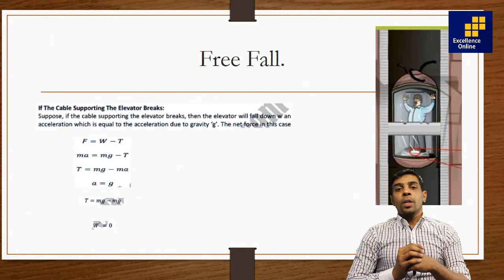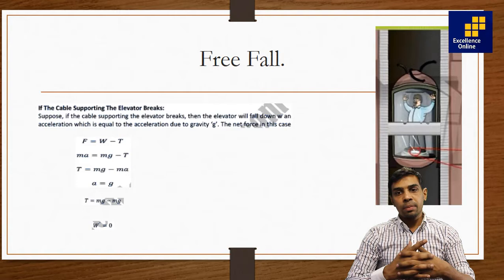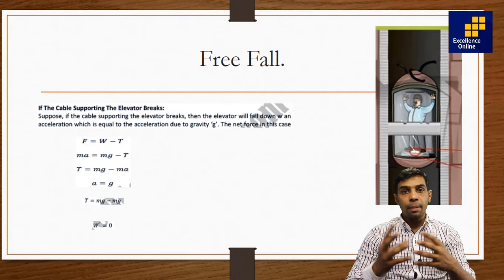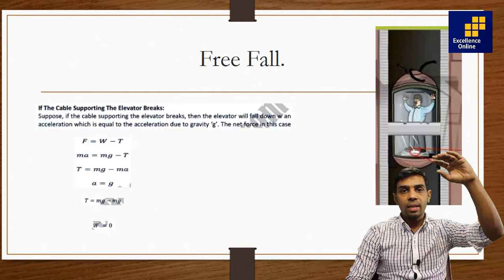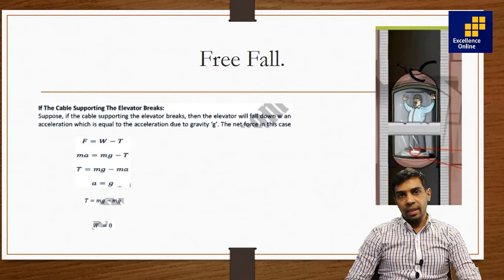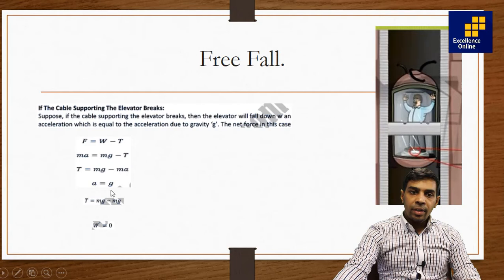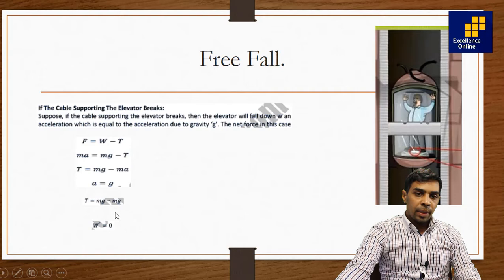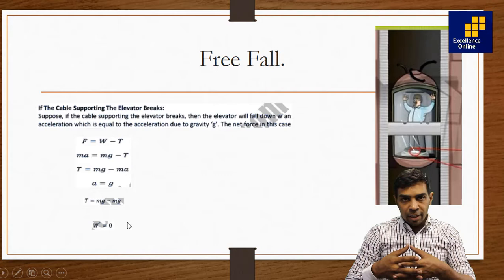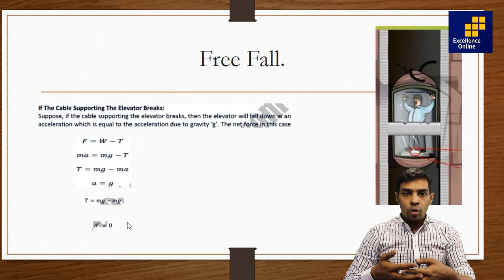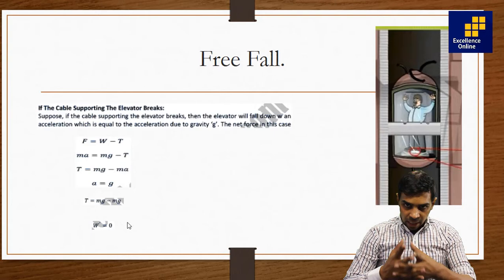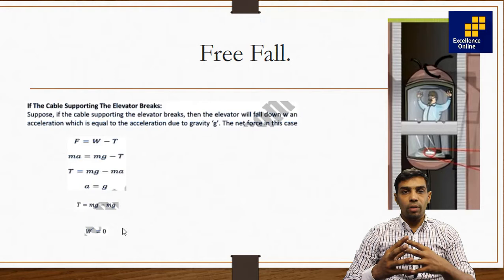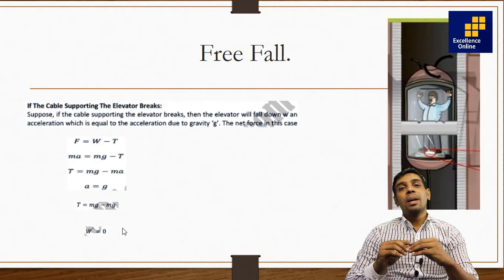Case 3: Free Fall. An object is in an elevator and the elevator falls freely under gravity, so acceleration equals g. Using the formula T = mg minus ma, substituting a = g gives T = mg minus mg = 0. The apparent weight is zero. So if a person is standing on a weighing machine in a lift that is in free fall, the apparent weight is zero. This is a common exam question — what is the weight of a person in free fall? The answer is zero.